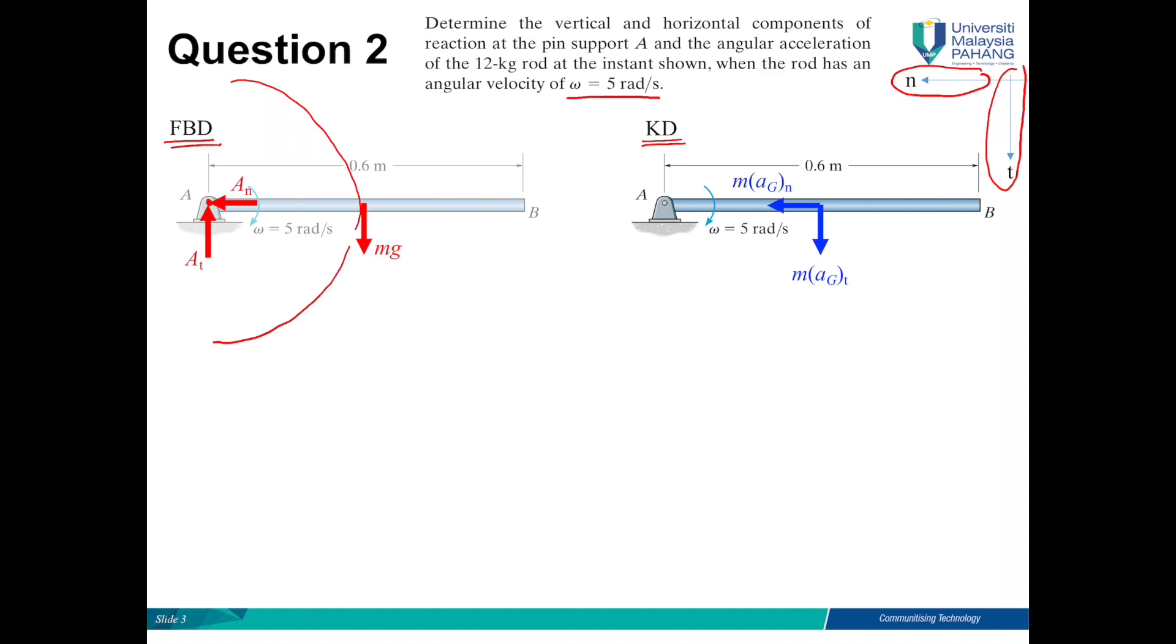Point A is the center of rotation over here. And normal coordinate is pointing to the center of rotation. This will be tangential. And also there will be a rotation, IG alpha.